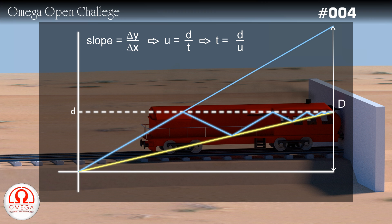For the distance-time graph of the bird, the slope is v and the time has to be same as the time taken by the train. So the distance travelled is slope into time, that is d by u into v. This is our answer.